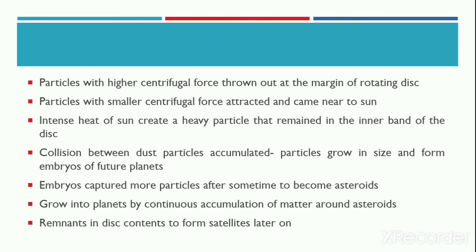The intense heat of the Sun creates heavy particles which remain in the inner band of the disk. Collision between dust particles caused them to accumulate and grow in size, becoming the embryos of future planets. With the passage of time, these embryos captured more particles to become asteroids. The asteroids grew further in size by continuous accumulation of matter, forming the present-day planets. Some matter still remaining in the disk later condensed to become the satellites.